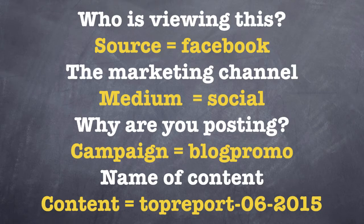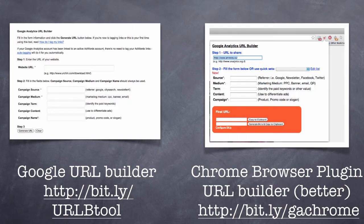Our source is Facebook, the medium is social, why are we posting — it's blog promotion, an ongoing campaign we run all the time. The content tag is 'top report' and the date. There are lots of different ways to add this information to links. We'll look at one in particular — the Chrome browser plugin. Google also provides a URL builder, but the Chrome browser plugin is my favorite way to add campaign tags to links, and I'm going to walk you through that.